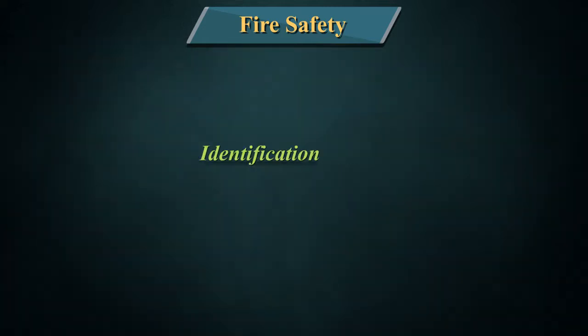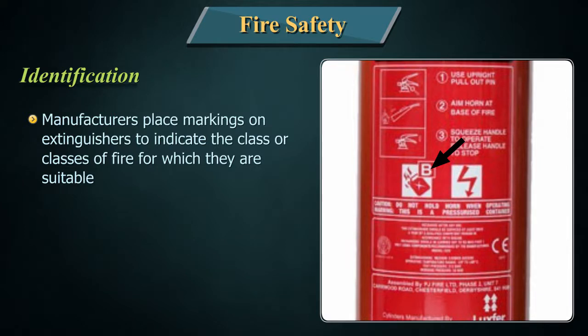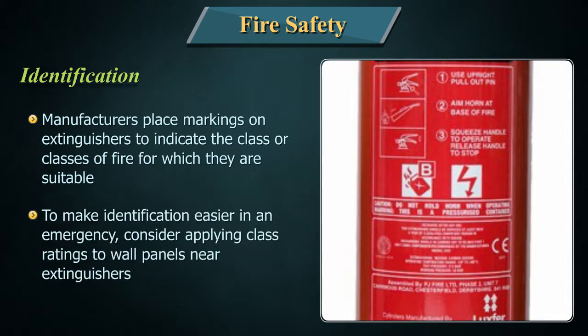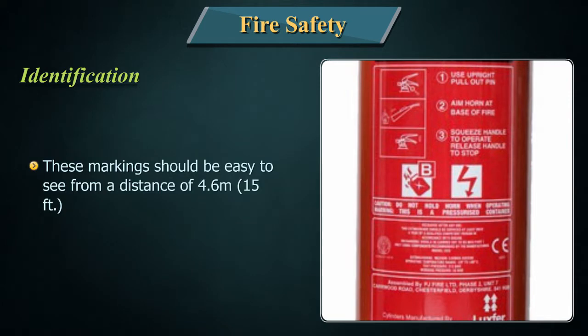Identification: Manufacturers place markings on extinguishers to indicate the class or classes of fire for which they are suitable. To make identification easier in an emergency, consider applying class ratings to wall panels near extinguishers. These markings should be easy to see from a distance of 4.6 meters, that is 15 feet.